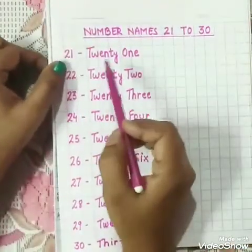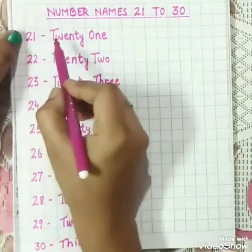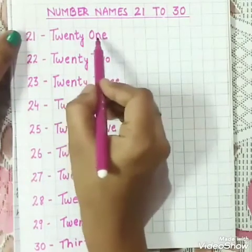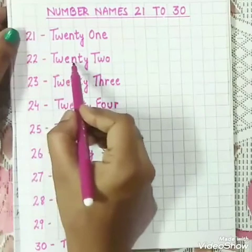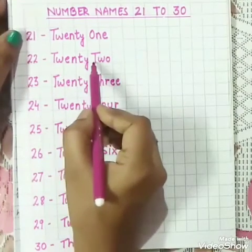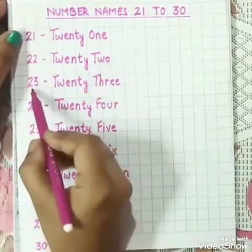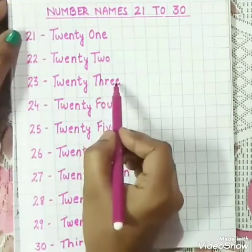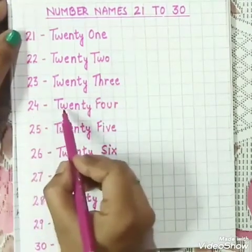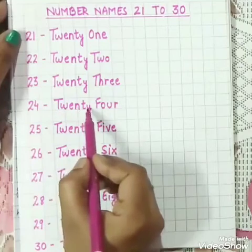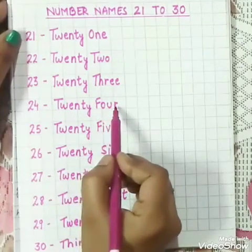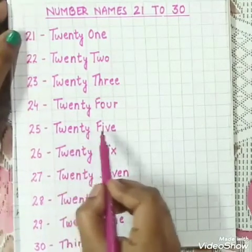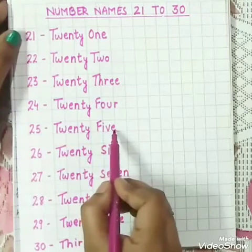Now let's revise it once again. 21 - T, W, E, N, T, Y, O, N, E - TWENTY ONE. 22 - T, W, E, N, T, Y, T, W, O - TWENTY TWO. 23 - T, W, E, N, T, Y, T, H, R, E, E - TWENTY THREE. 24 - T, W, E, N, T, Y, F, O, U, R - TWENTY FOUR. 25 - T, W, E, N, T, Y, F, I, V, E - TWENTY FIVE.